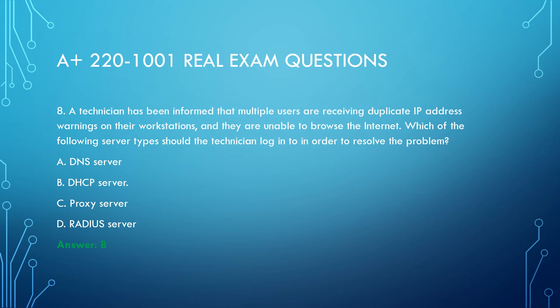Question 8. A computer becomes infected with malware, which manages to steal all credentials stored on the PC. The malware then uses elevated credentials to infect all other PCs at the site. Management asks the IT staff to take action to prevent this from reoccurring. Which of the following would best accomplish this goal? A. Use an antivirus product capable of performing heuristic analysis. B. Use a host-based intrusion detection system on each computer. C. Disallow the password caching of accounts in the administrator's group. D. Install a UTM in between PC endpoints to monitor for suspicious traffic. E. Log all failed login attempts to the PCs and report them to a central server. Answer: D.